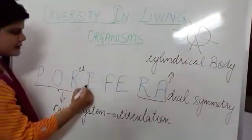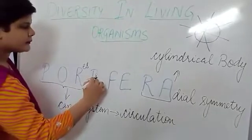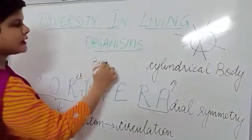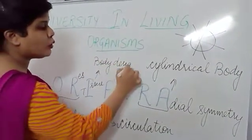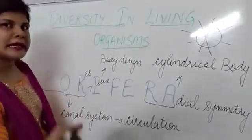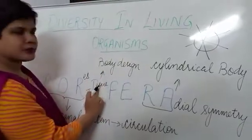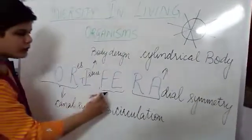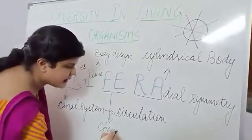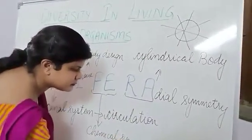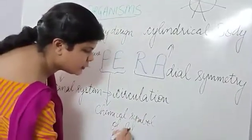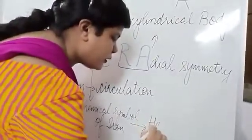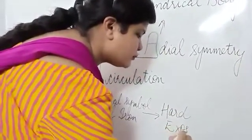Next is the alphabet I. With I we can remember that all Porifera have tissue level of body design — that means no organ or organ systems are found, but only the body is made up of tissues. And the last characteristic comes from the two alphabets F-e. We know that Fe is the chemical symbol of iron, and iron is a hard metal. So with this we can remember that all Porifera have a hard exoskeleton.